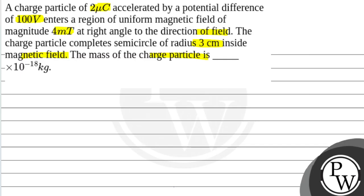The charged particle has mass m and charge q, which is given as 2 into 10 to the power minus 6 coulombs. It is accelerated by a potential difference, which is given as equal to 100 volts.